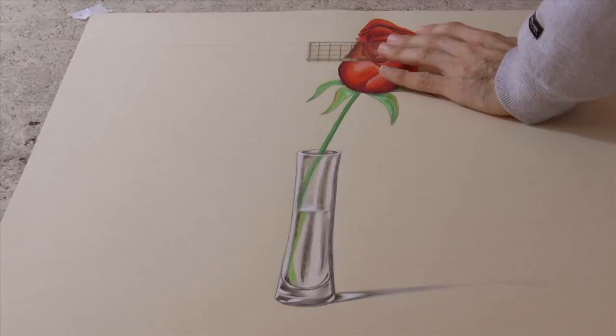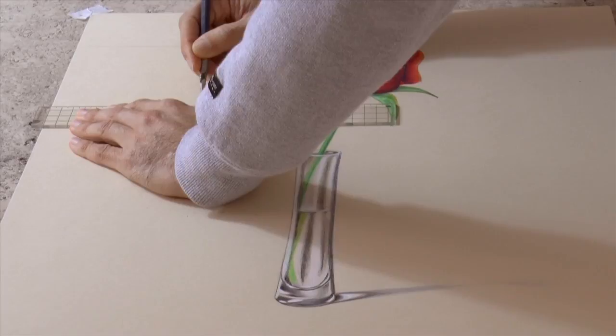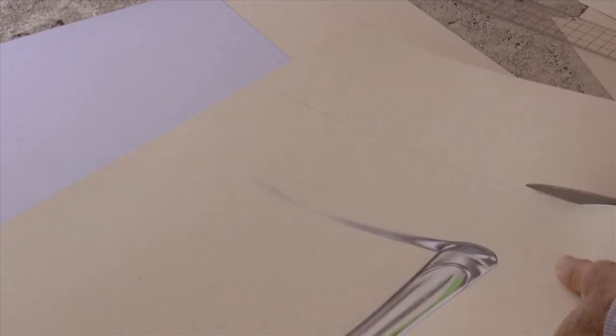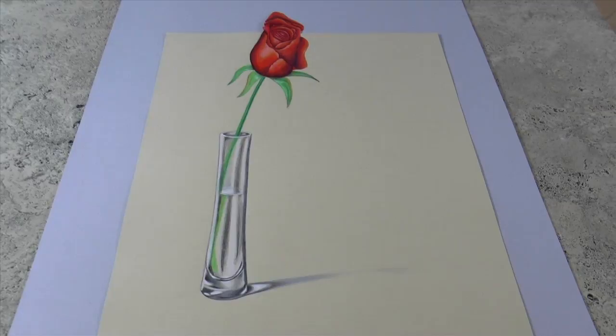A trick to make it look even more in 3D is to cut the border of the paper making your drawing go over it. In this case I will also cut the other sides just because my drawing is a little bit small for this paper.